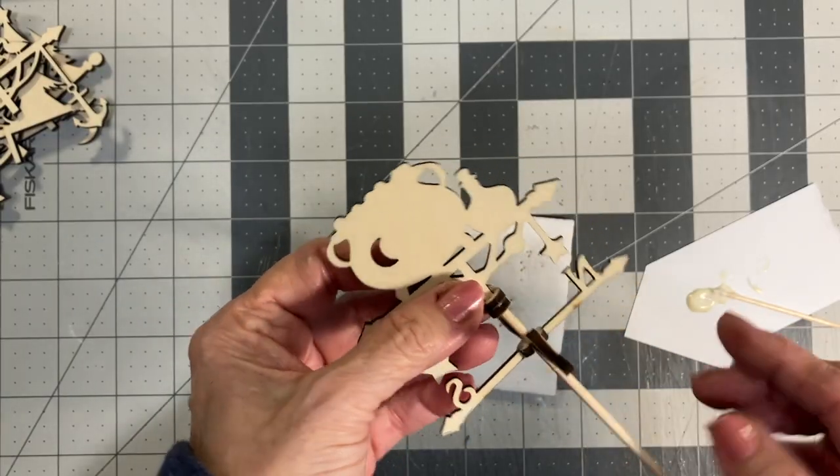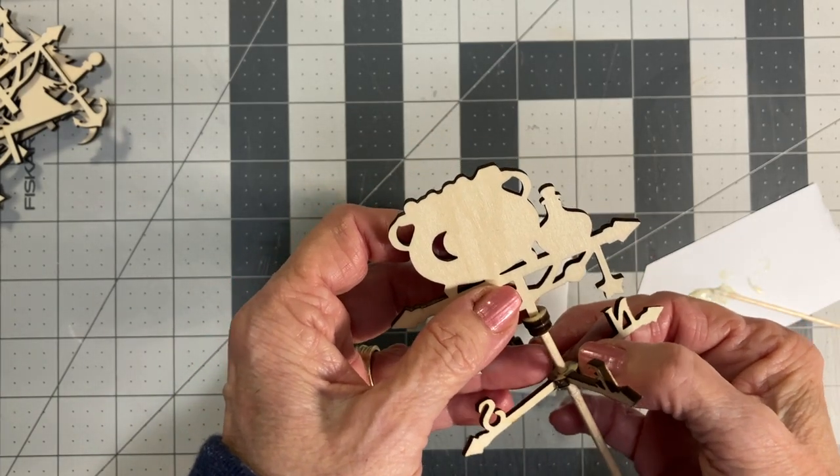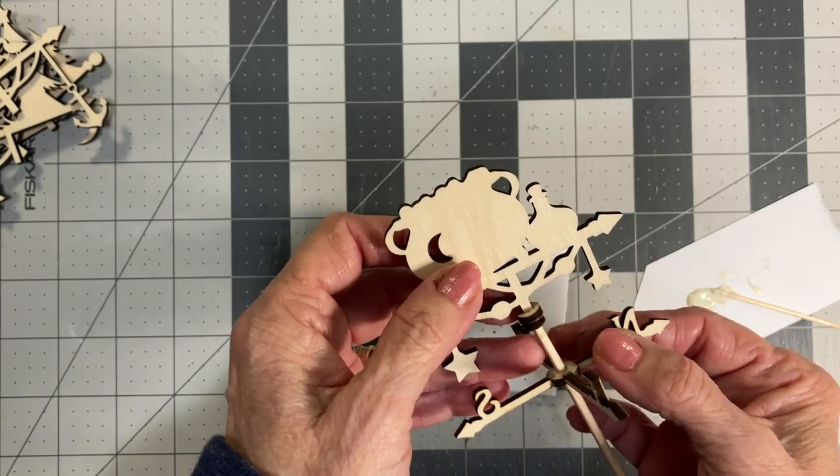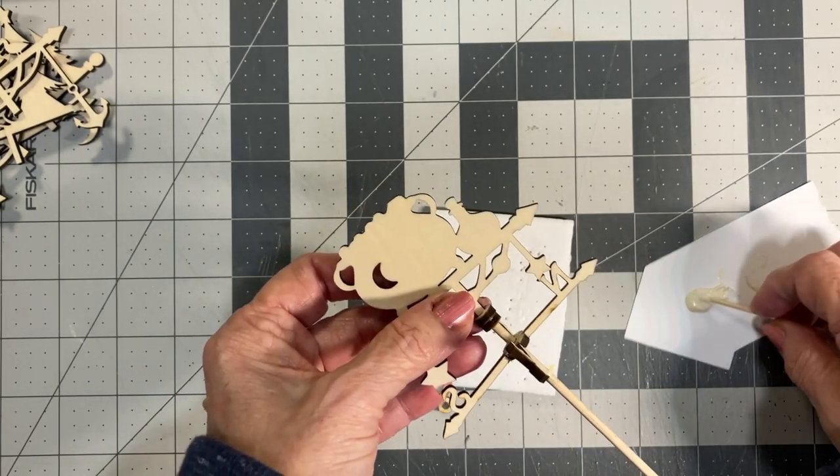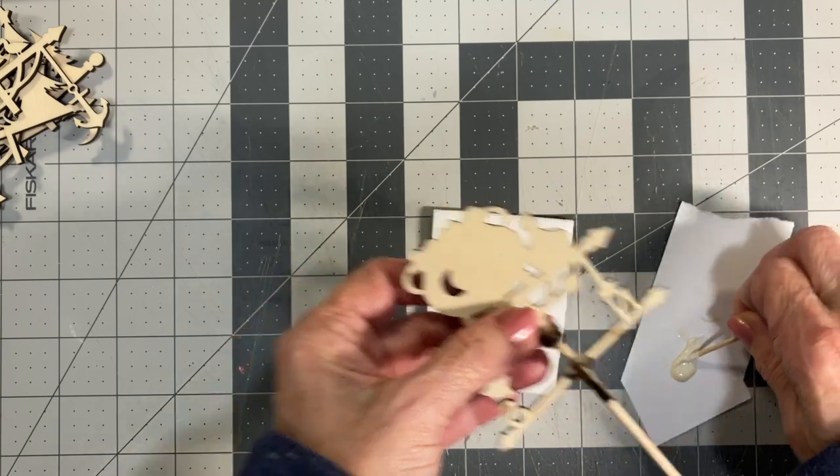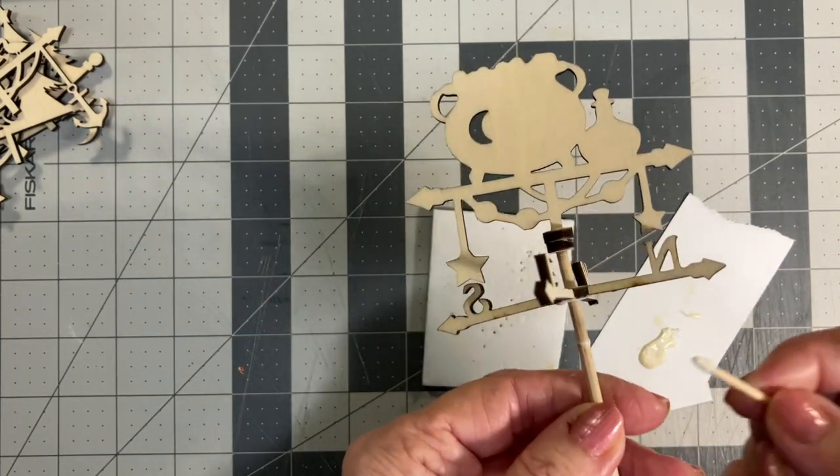Now that everything's dry, you want to take the portion with the north, south, east, and west and slide it up onto the dowel rod. Look at it and make sure that it's not up so high that it's going to hit the parts that hang down if your design that you're using has that.